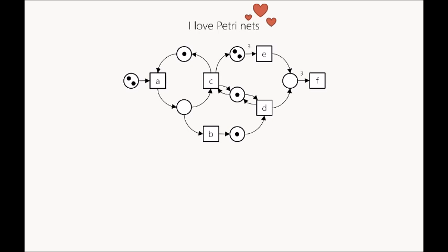This example is our running example for the presentation. The transition names are just a, b, c, d, e, and f, so you can already see it's an academic example. We also allow for arc weights, so we have two arcs weighted with three in this example.